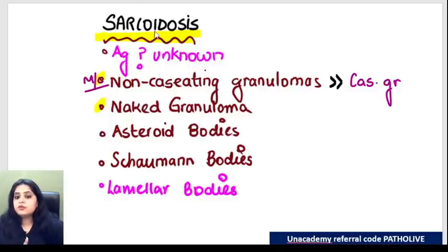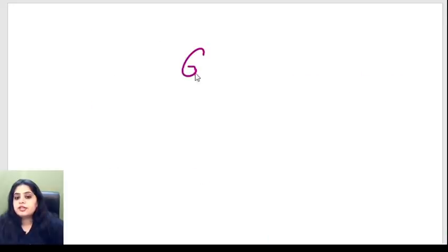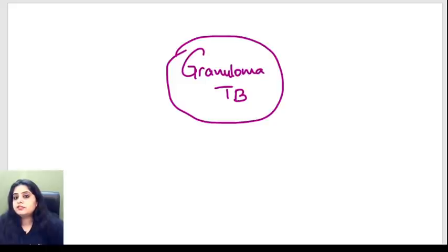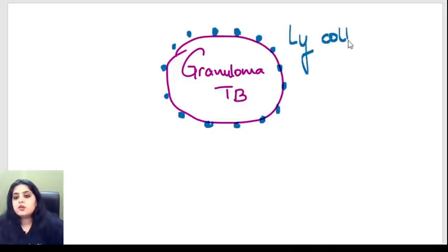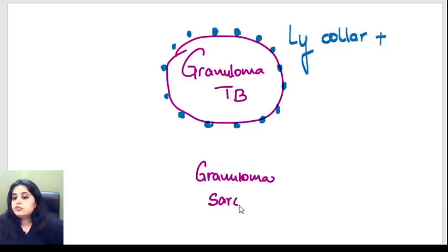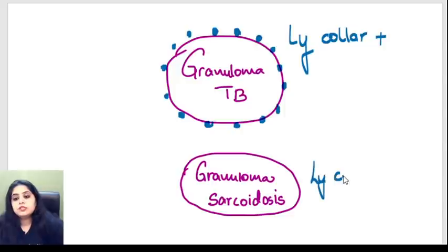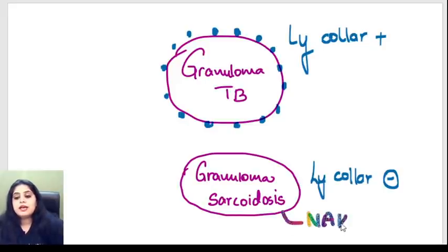The second feature of sarcoidosis is the naked granuloma. Usually in tuberculosis, the granuloma is surrounded by a collar of lymphocytes - a lymphocytic collar. Whereas in sarcoidosis, you don't see this lymphocytic collar. It's just one granuloma with no lymphocytes around it. The lymphocytic collar is absent, meaning the clothing is absent, and that is why we refer to a sarcoid granuloma as a naked granuloma.